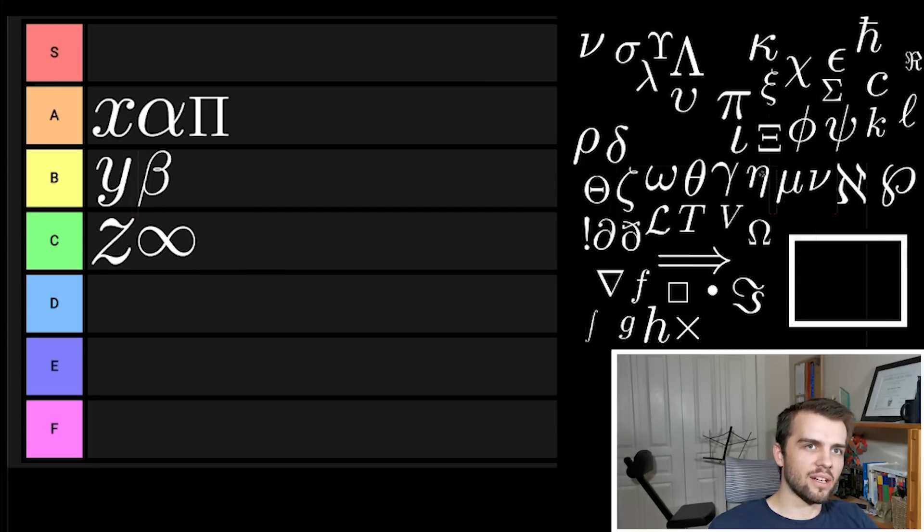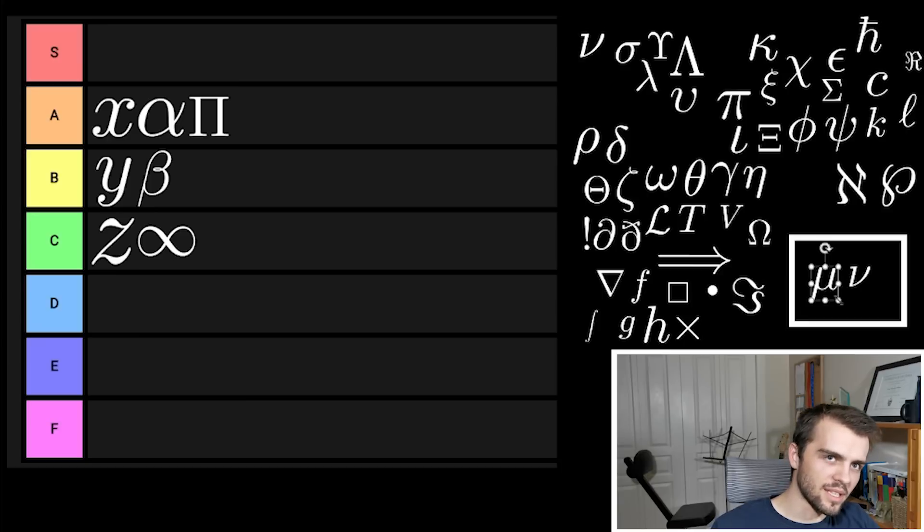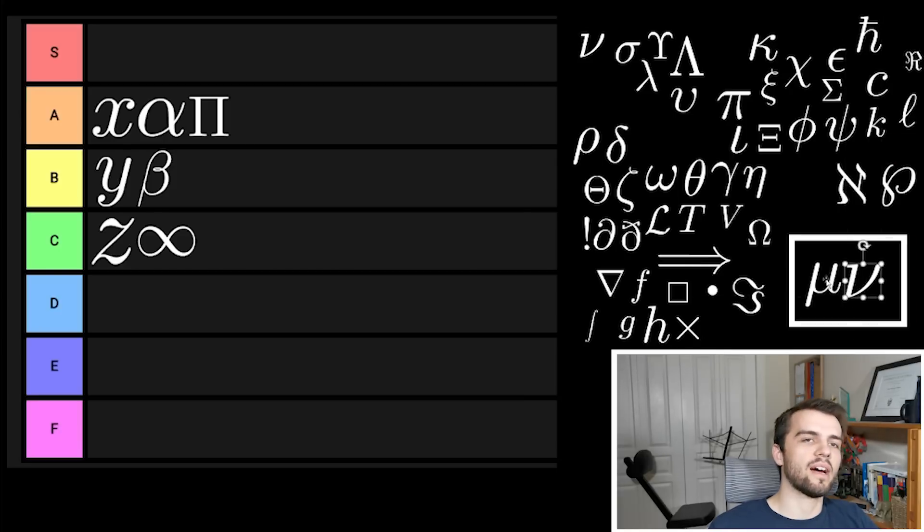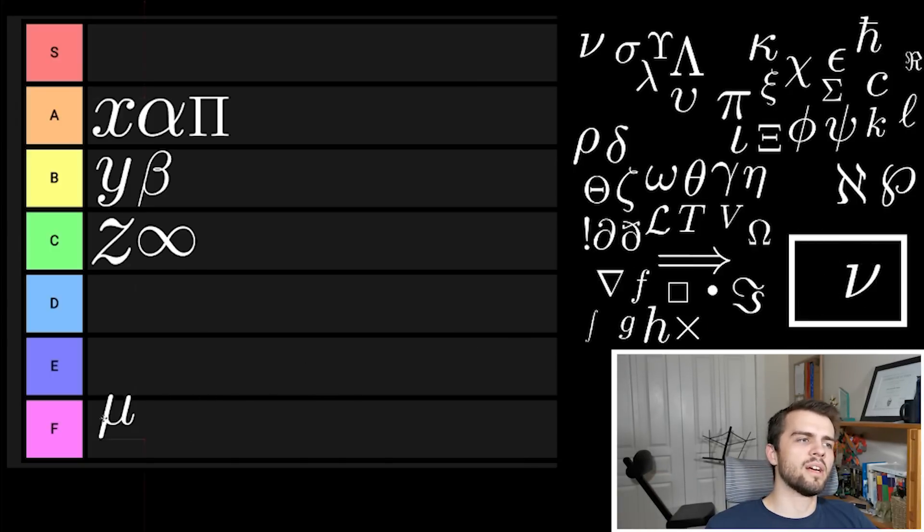Two symbols I hate: mu and nu. These can go die in hell together because whenever they're used together on the same thing you always mix them up. They're the same thing. Who's coming up with all these shapes that have this up-down-up shape to them? Both of them are like that. You've got to be more creative and don't use them together. Both of these are F tier for lack of creativity. Mu is just a U with a thing here.